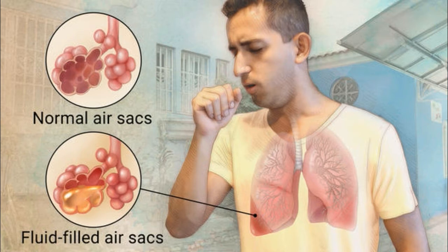In infants infected with HIV, Pneumocystis jirovecii is one of the most common causes of pneumonia, responsible for at least one-quarter of all pneumonia deaths in HIV-infected infants.